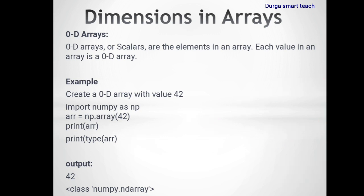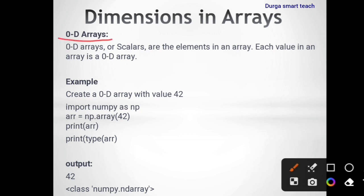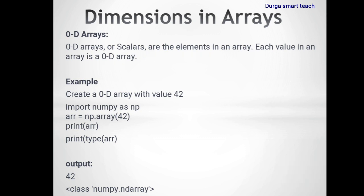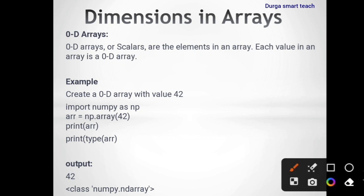So what are dimensions? Arrays have 4 types of dimensions. The first one is 0-dimensional array, also known as a 0D array. 0D arrays are also known as scalars. The scalars are the elements in an array — each value in an array is known as a 0D array. An array which contains only one element is a 0D array.